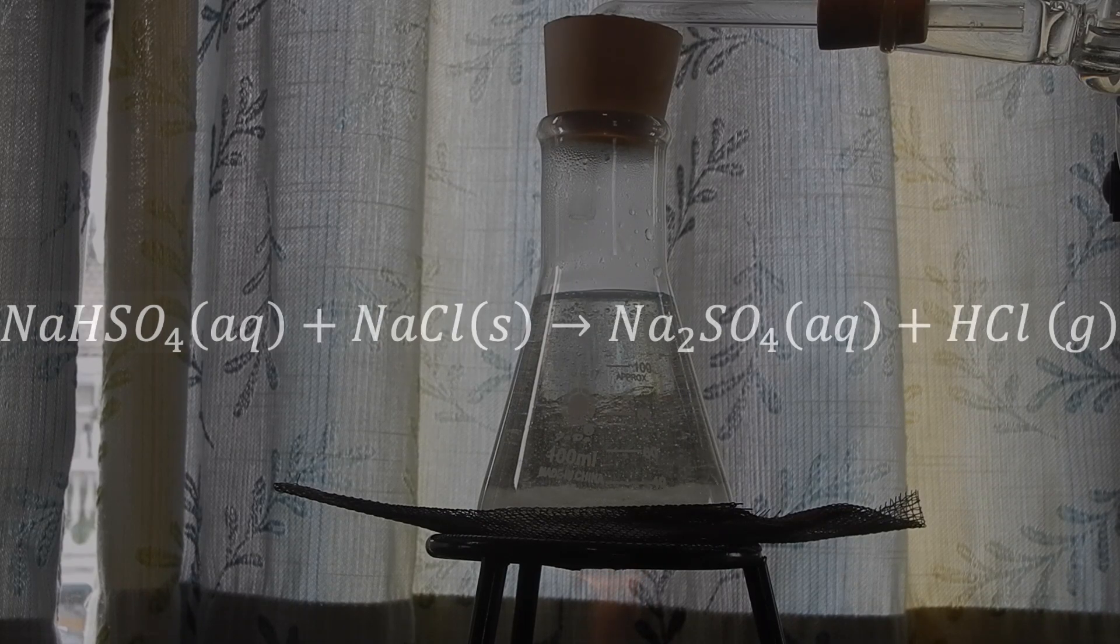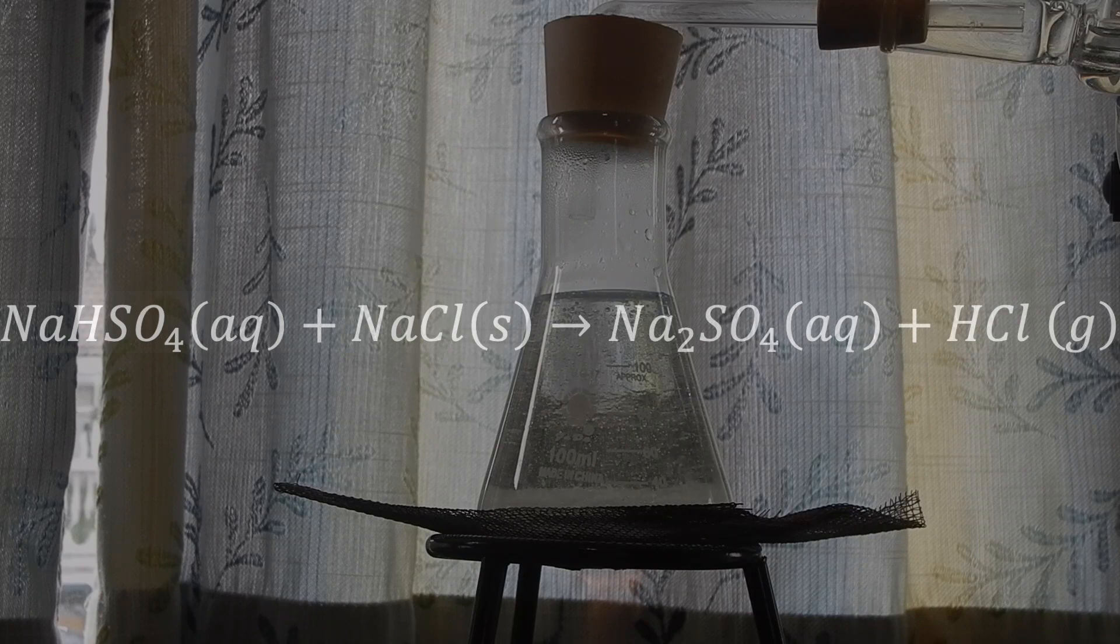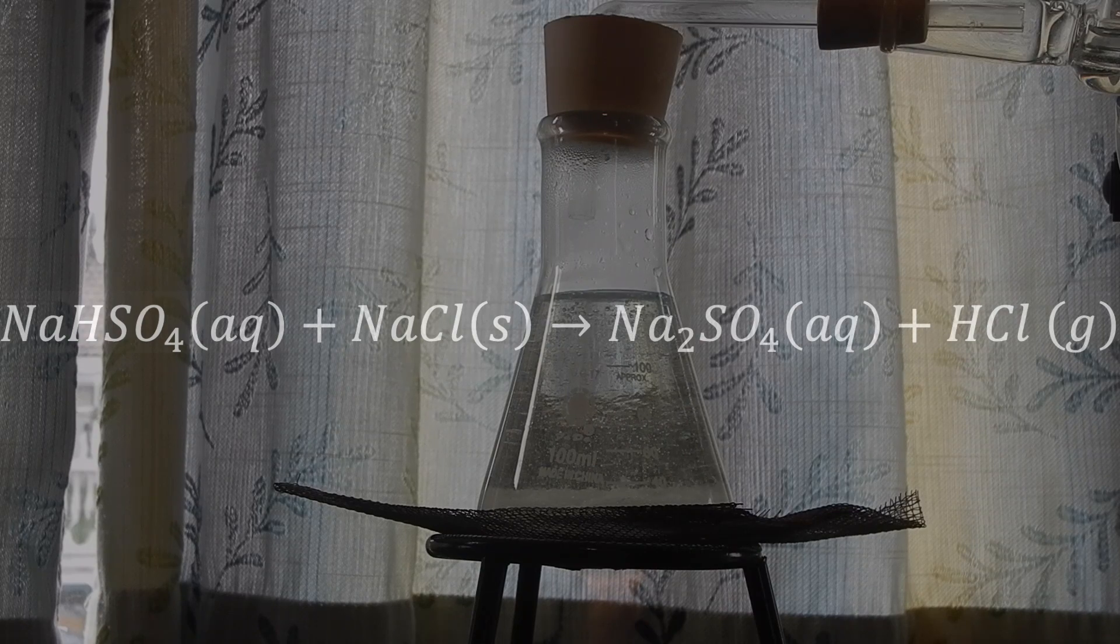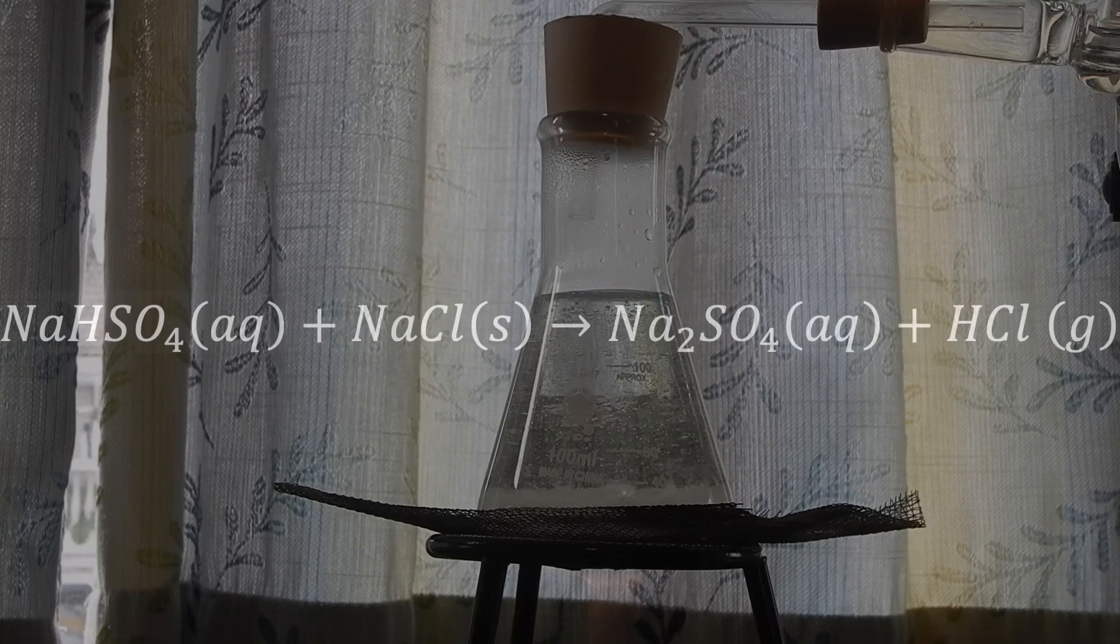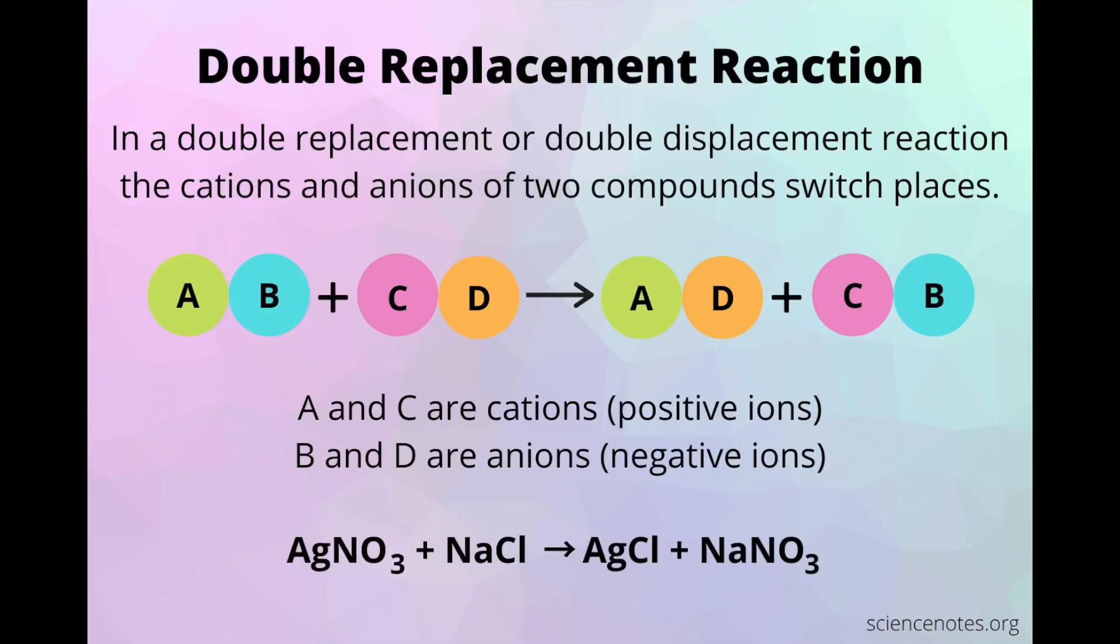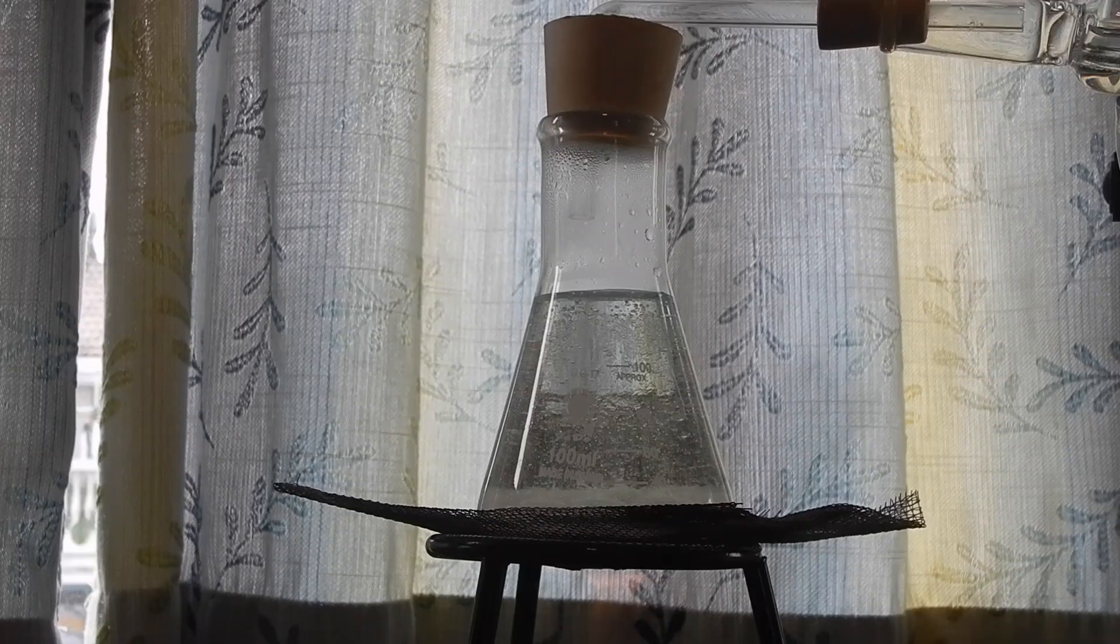The reaction is called double displacement because the sulfate ion displaces the chloride ion from the sodium chloride to hydrogen chloride. In middle school, teachers mentioned that double displacement reactions only happen if one of the products is a precipitate or a gas.